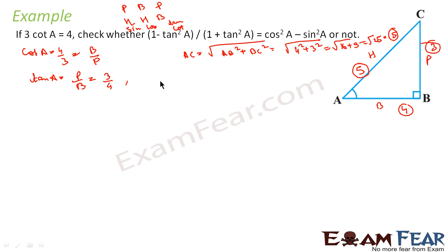I need cos A and sin A also. Sin A is P by H, which is 3 by 5. Cos A is B by H, which is 4 by 5. So I have all the values: tan A, cos A, sin A, everything is there.